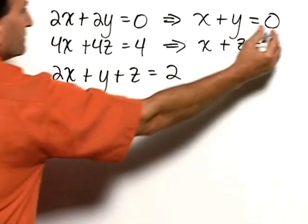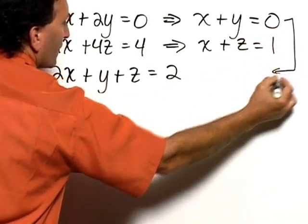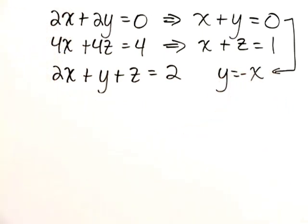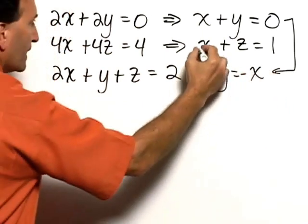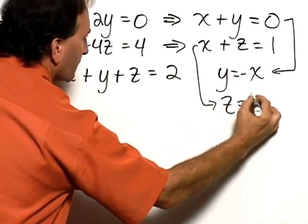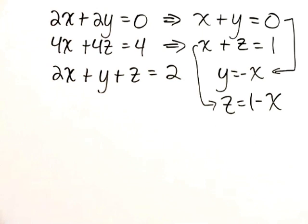So, with this equation, I say y is equal to negative x. With this equation, we say that z is equal to 1 minus x. And now I make the substitutions.